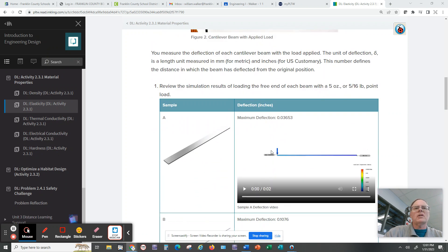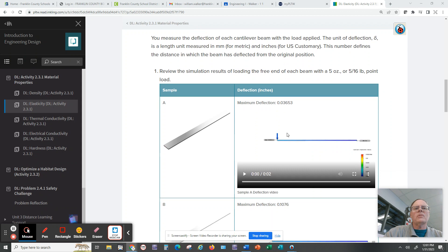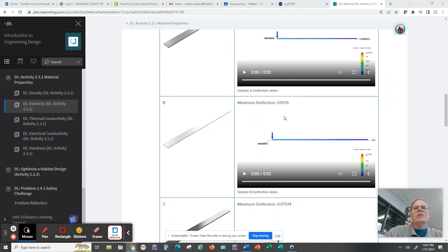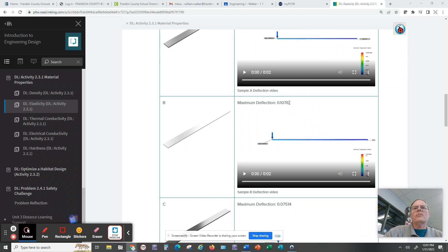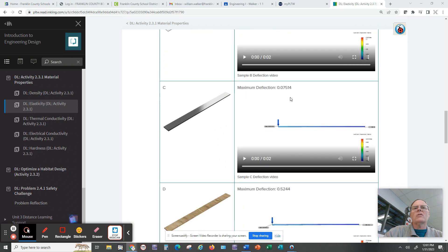They give you five different cases, and you can play the simulations here if you wish. They're giving you the maximum deflection on each of these. So they're showing you the sample and they're giving you the deflection. Notice as you go down through here, the deflection gets larger and larger.